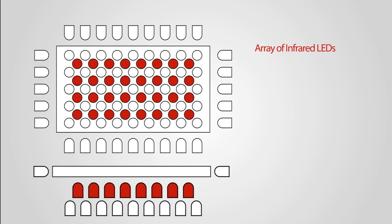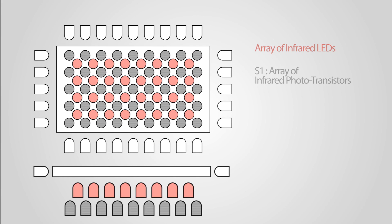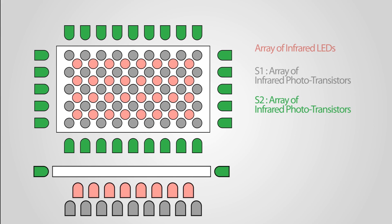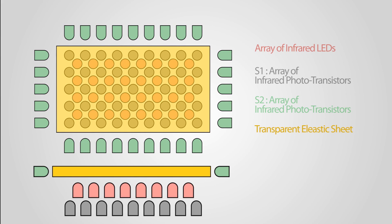Longpad hardware consists of an array of IR LEDs, arrays of IR photo transistors for proximity and force sensing, and the transparent elastic sheets.